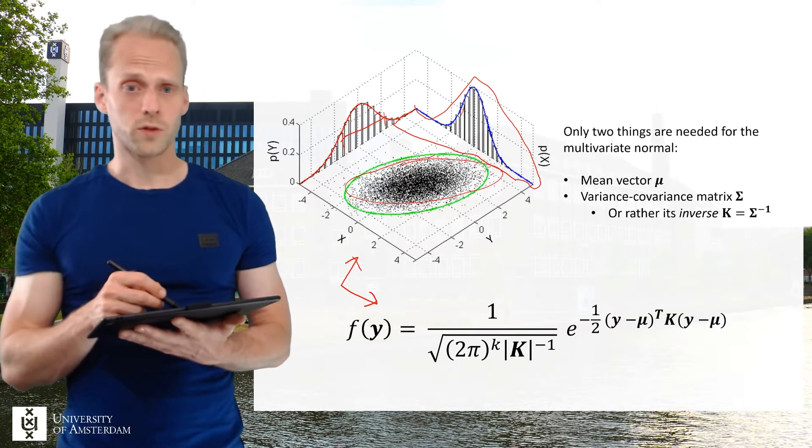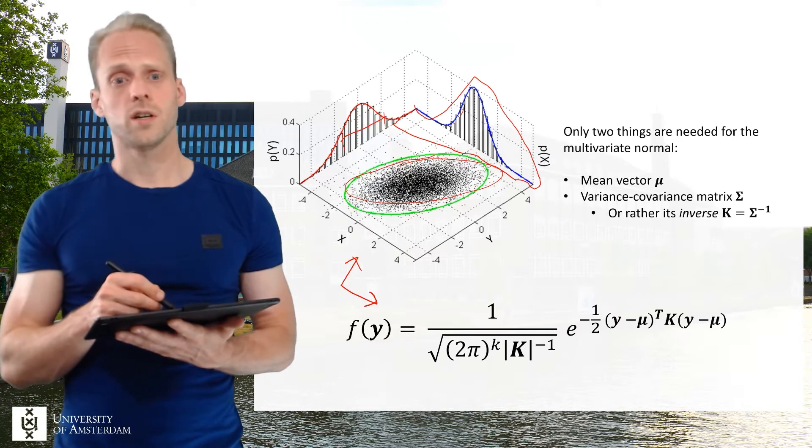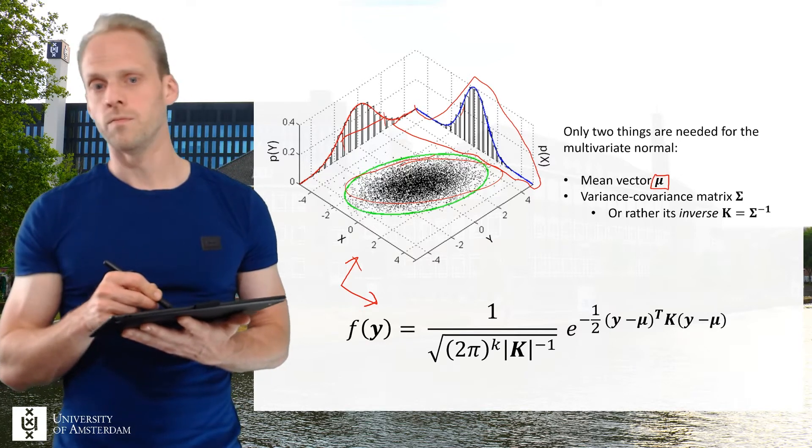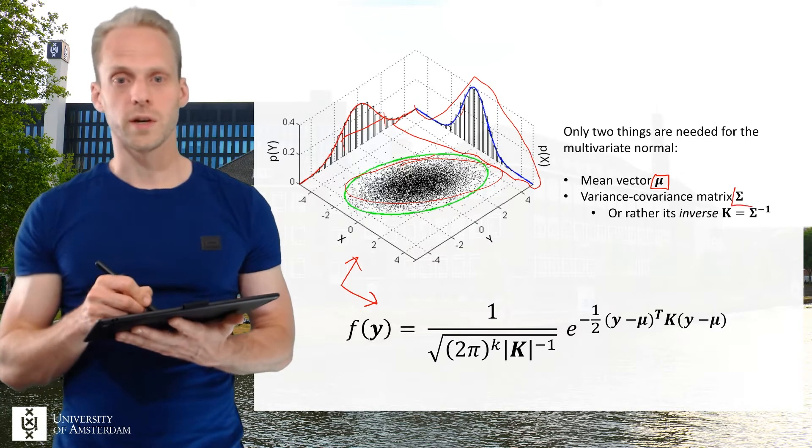The multivariate normal uses two particular parameters. One is this mean vector which is called mu, and the other one is a variance covariance matrix which is called sigma.